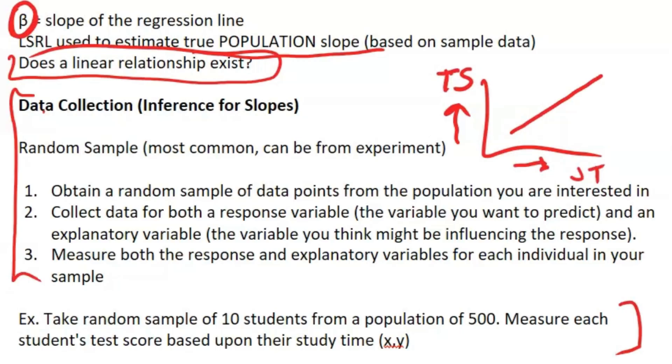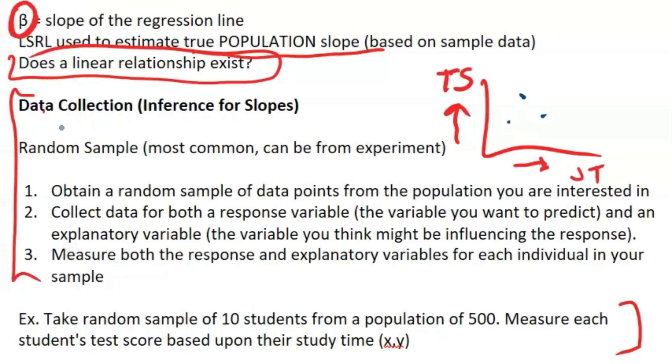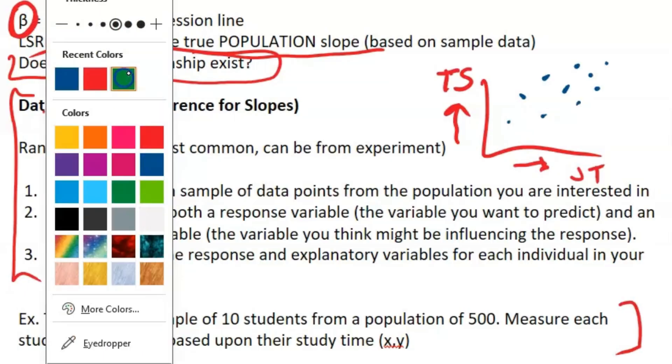What I would do is if I have a student population of 500 people, I would take 10 of those students just to satisfy the 10% condition because we also want independence as we'll see later. Then just measure each student's test score and their study time, and then we would plot those data points.